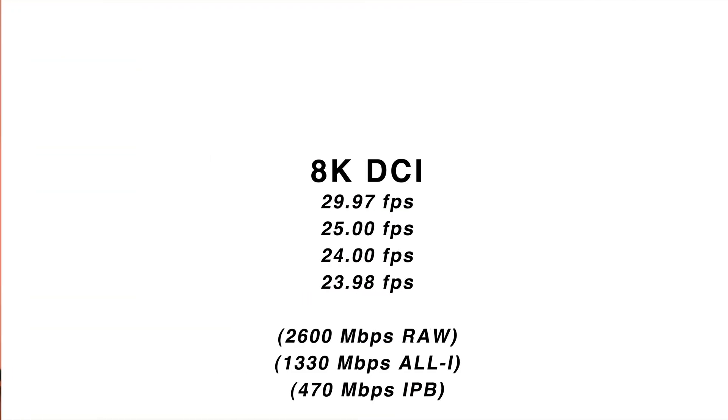Now let's get into 8K DCI. 8K DCI can shoot at 23.98, 24, 25, and 29.98 frames per second. DCI 8K supports both IPB and All-I, just like UHD, but in DCI you also have the RAW option. So you have to use DCI — the wider option — to shoot RAW. One important note: you cannot use digital stabilization when shooting in 8K RAW. I actually made a quick tip video about that.